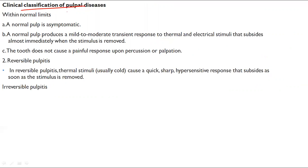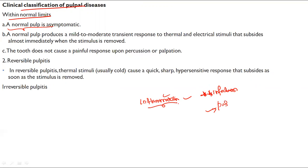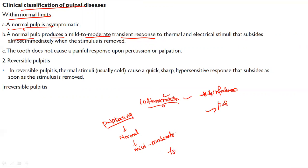Let us talk about the different classification of pulpal diseases. A normal pulp is asymptomatic — no infection, no inflammation. Inflammation indicates the pulp is not normal. A normal pulp produces a mild to moderate transient response on pulp testing, and upon palpation or percussion you would not notice any painful response.